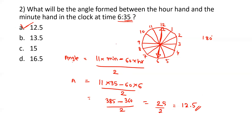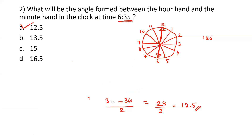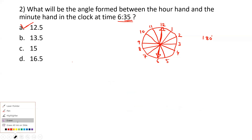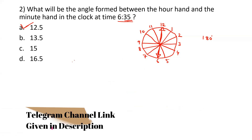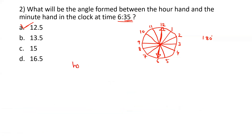Is this the only solution? No — we can also solve this using logical thinking. If you observe the clock carefully, from 12, if we traverse the entire clock, that is 360 degrees. From 12 to 3 is 90 degrees, equally divided into three divisions of 30 degrees each — from 12 to 1, 1 to 2, and 2 to 3. The same applies to all quarter divisions: 3 to 6, 6 to 9, and 9 to 12, each having three 30-degree divisions.